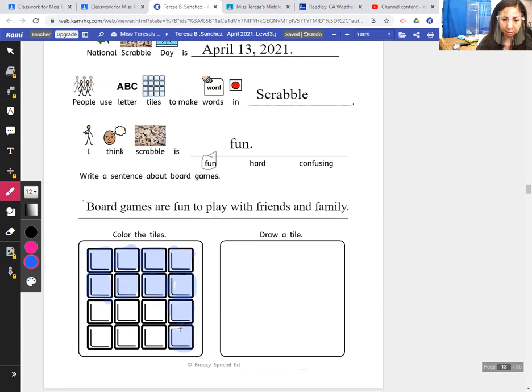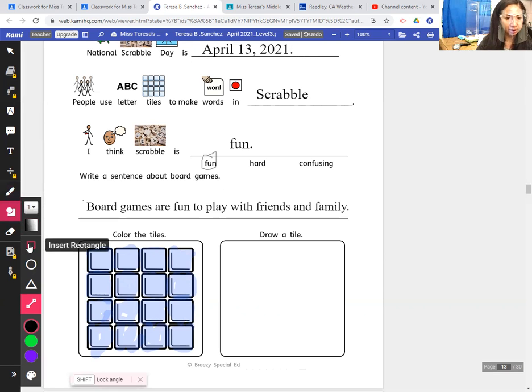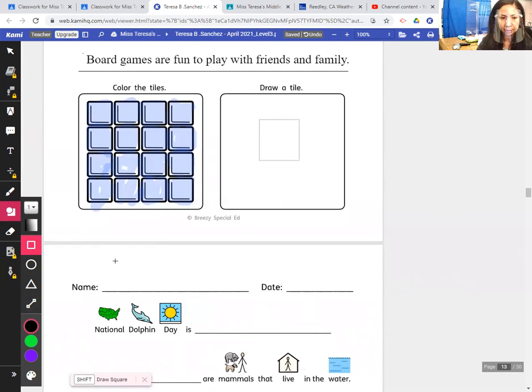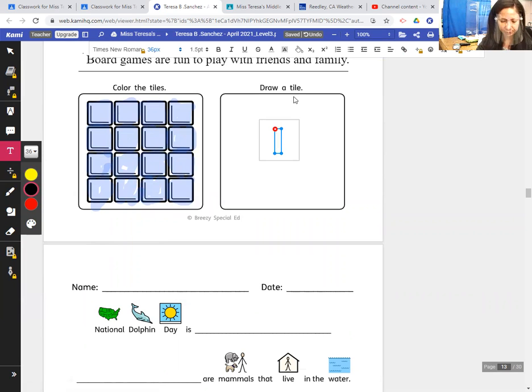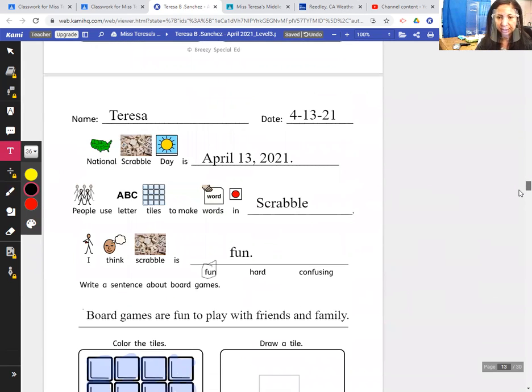This one says draw a tile, so draw a tile one time. I'm going to just draw a square. And you can put a letter in it because usually the Scrabble tiles have letters on them. Just a letter. That's my Scrabble tile, okay.